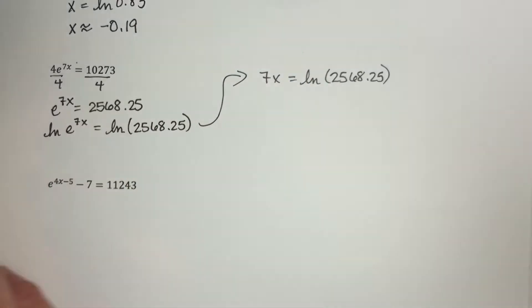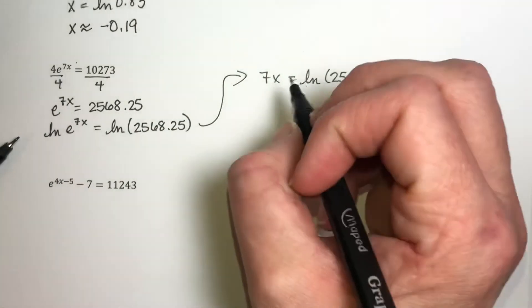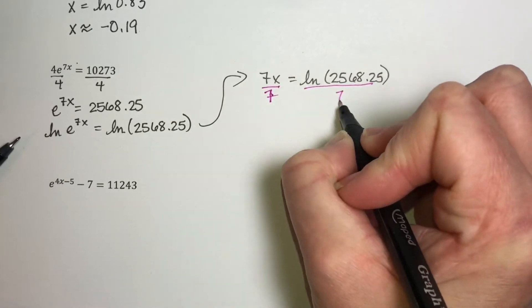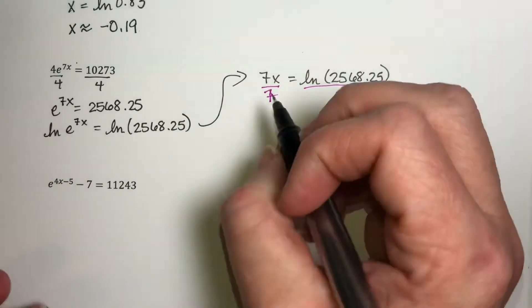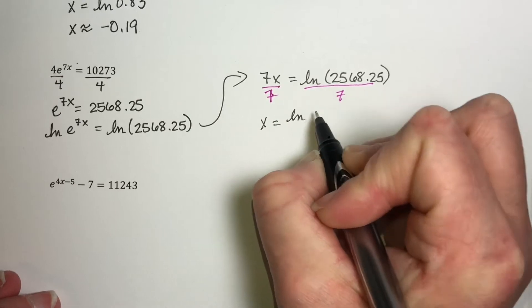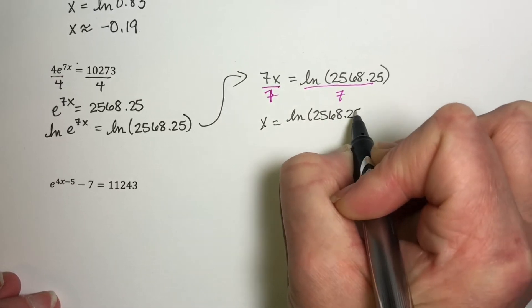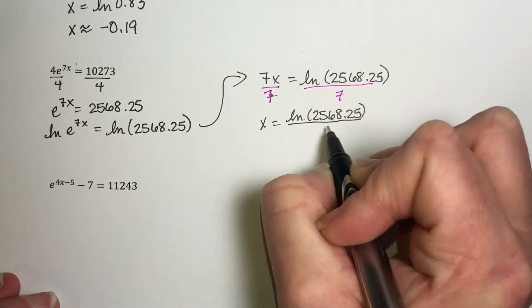That's exactly what we do here. Divide this by 7, divide this by 7. So your x value is exactly natural log of 2568.25 divided by 7.